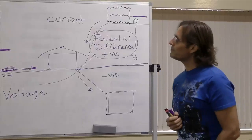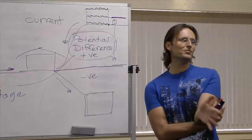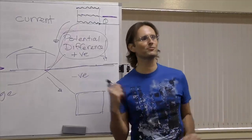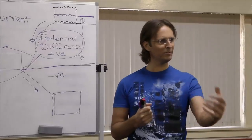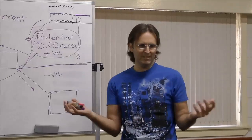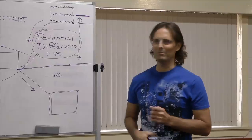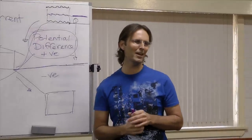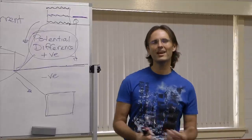Direct current flows from positive to negative — that's the convention for how we measure current. The way electrons actually flow is from negative to positive, but if you assume current flows from positive to negative, you won't go astray as a general rule. Electrons are repelled by the negative and attracted to the positive.